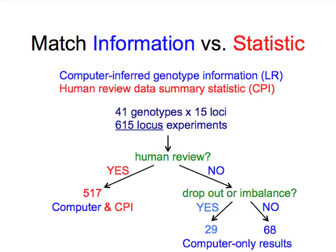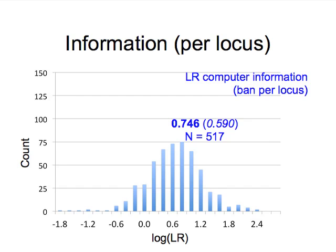For the 41 genotypes across 15 loci, we have 615 locus experiments; human review was done on 517 of those. This is what the computer found: on the x-axis, a scale ranging from negative to positive information in ban units — log likelihood ratio — you see a bell-like curve with an average log of about three-quarters, corresponding to a LR of around five, per locus. You see it's a bell-shaped curve that goes both negative and positive, to the left and right of zero. This is the normal sort of data you see in science. A negative value means it's evidence against the identification hypothesis.